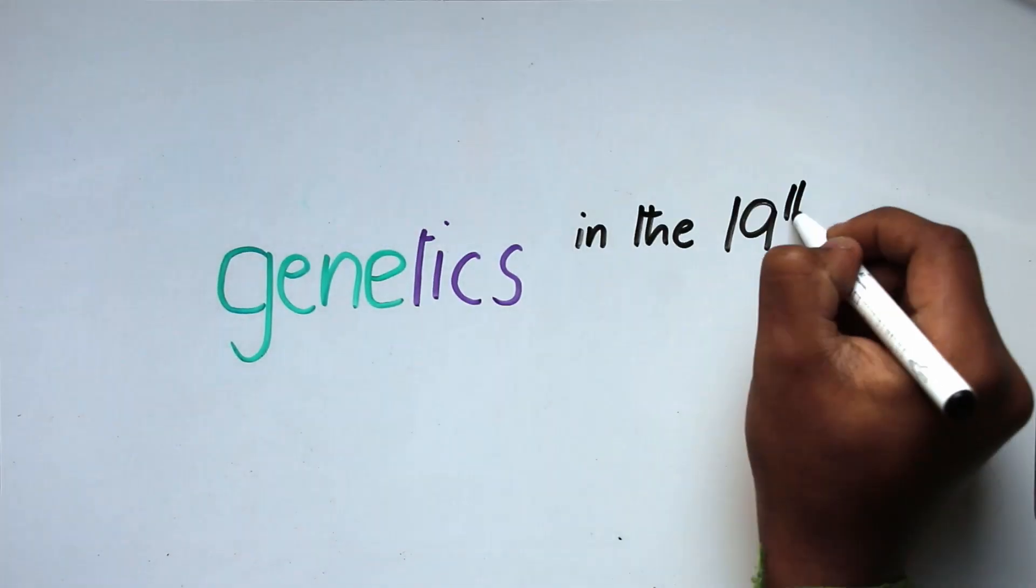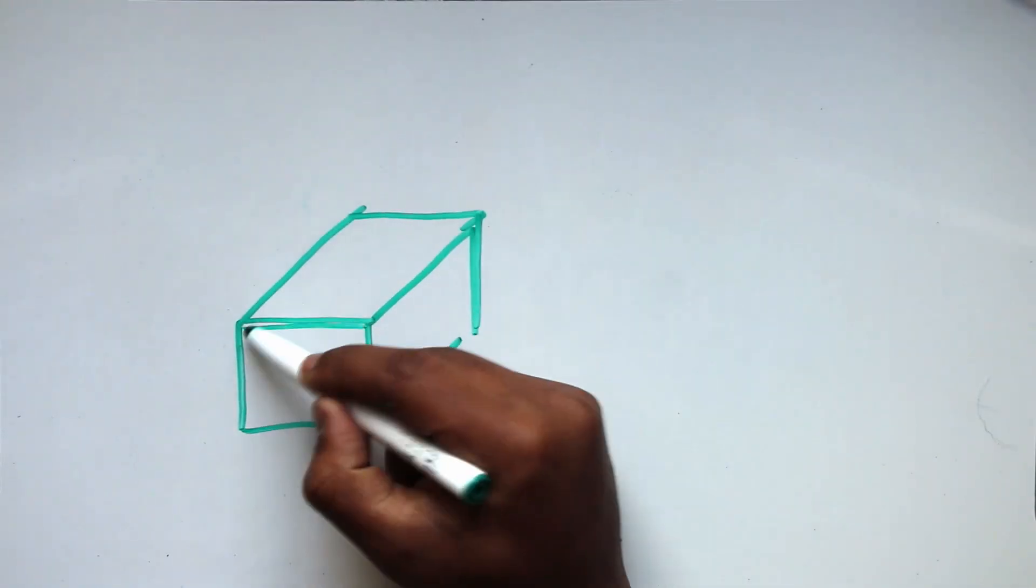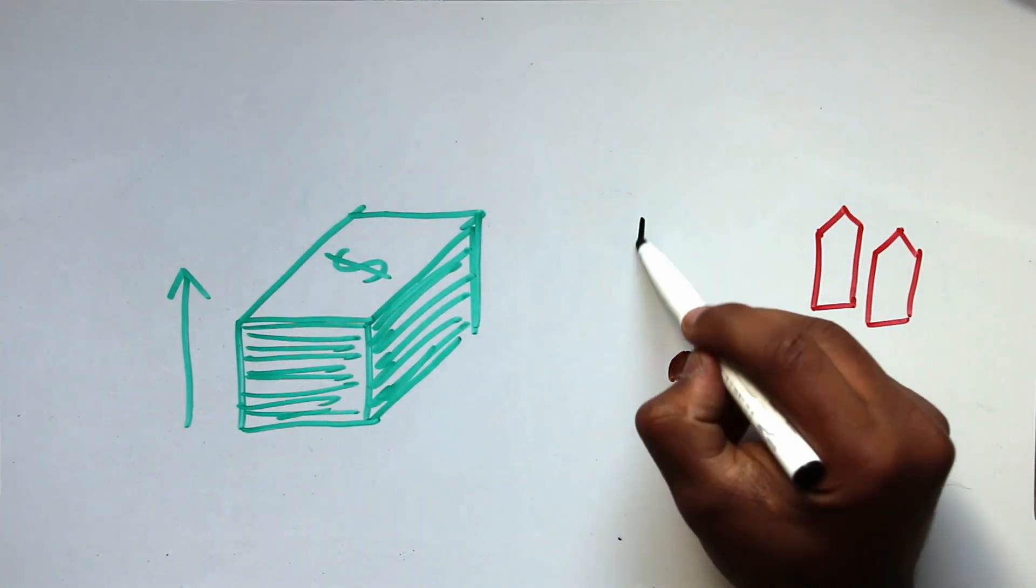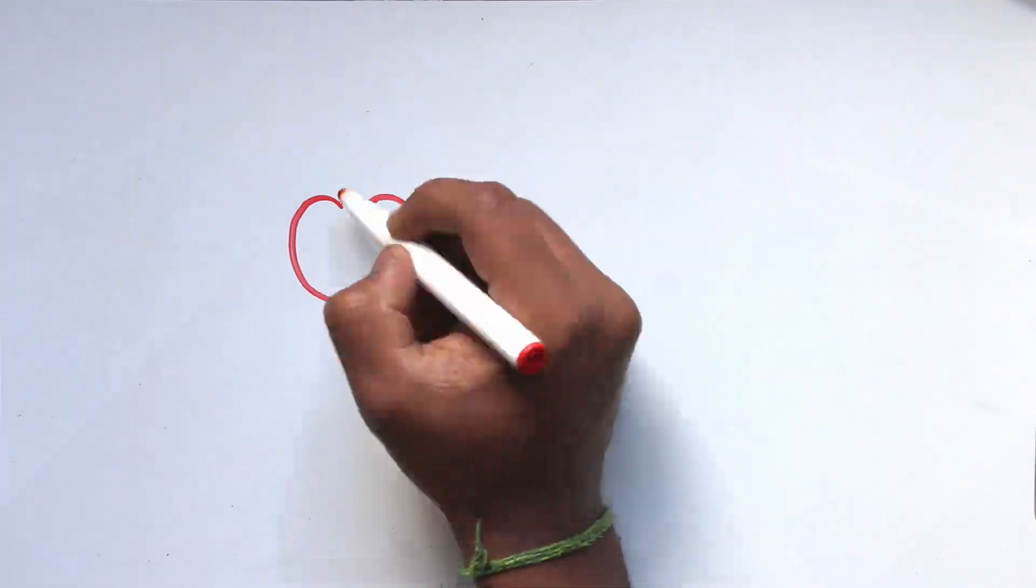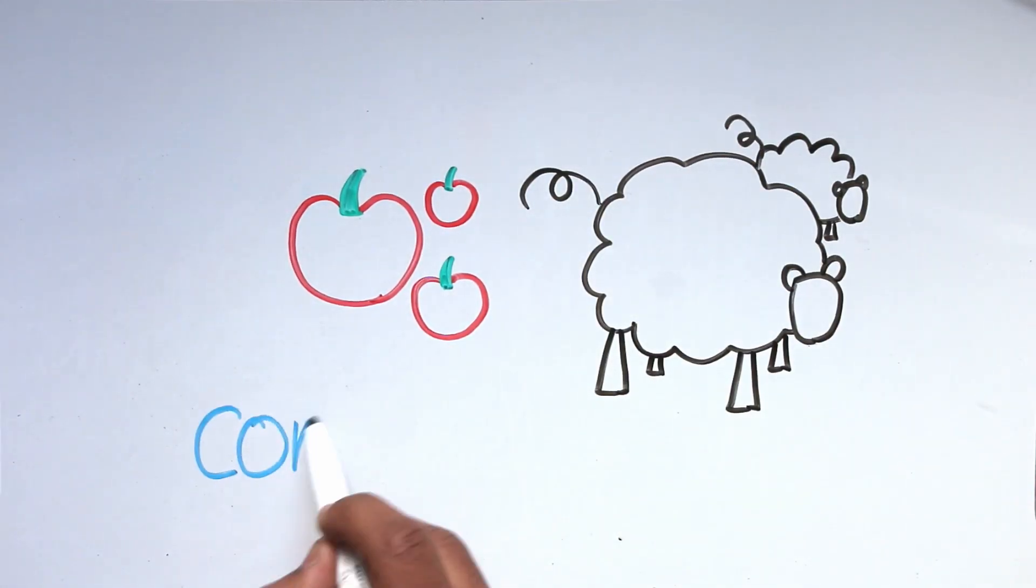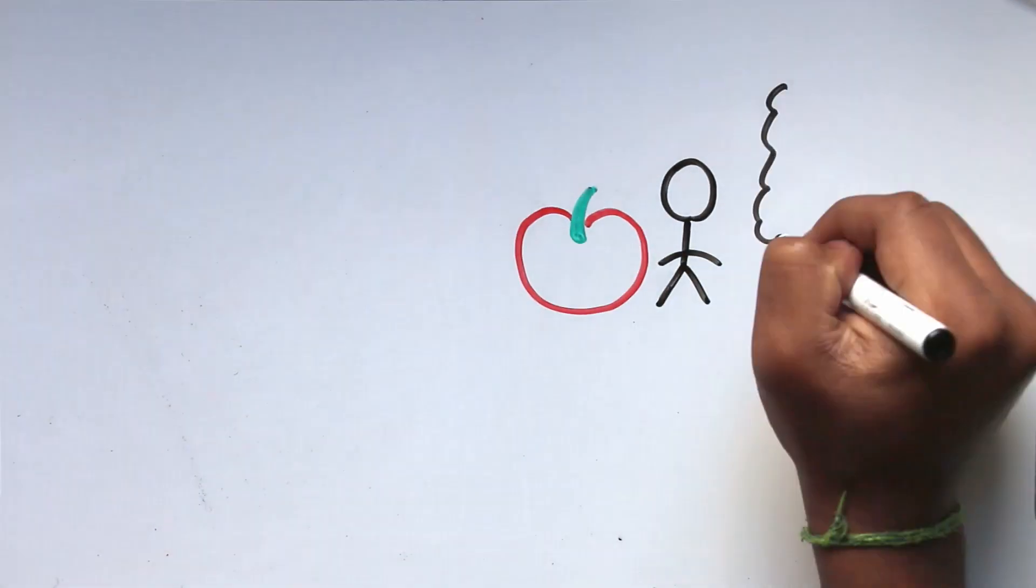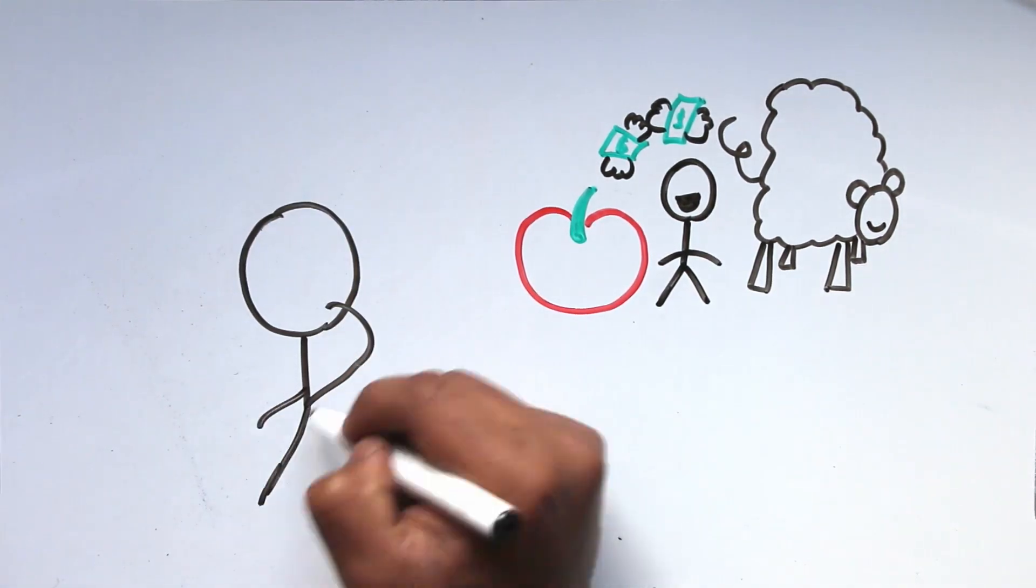First, you have to understand the point of genetics in the 19th century. This was a time when the economy was really starting to flourish, and trade between villages, towns, and cities started to become really common. As more and more people were selling things like tomatoes and sheep, competition became more and more prevalent. Whoever had the biggest tomato, or the wooliest sheep, became rich, so everyone was trying to learn how to beat the other sellers.